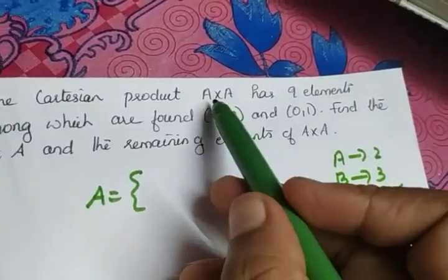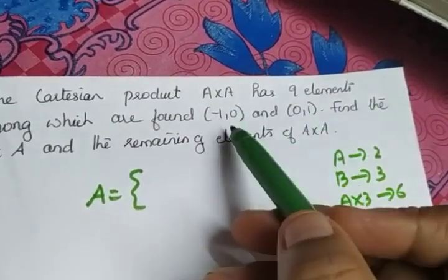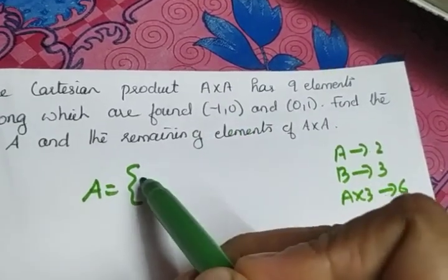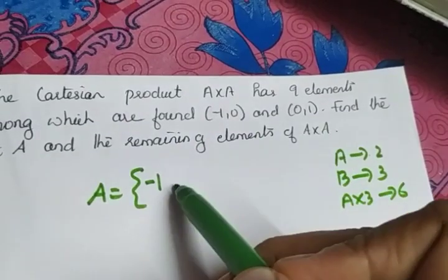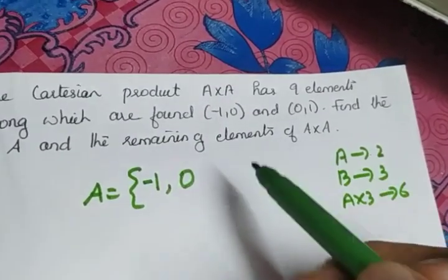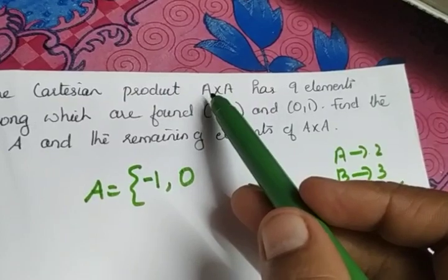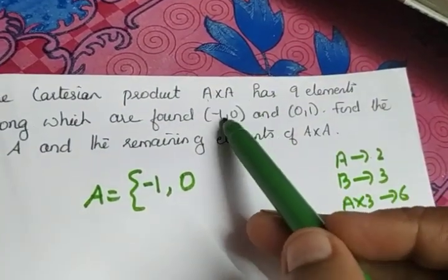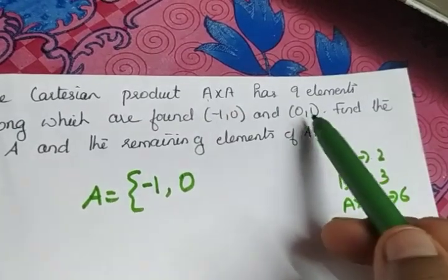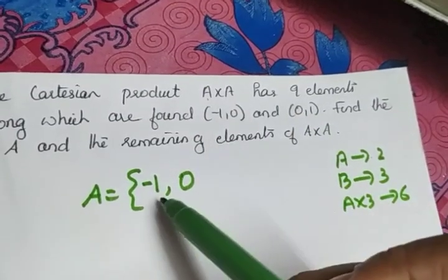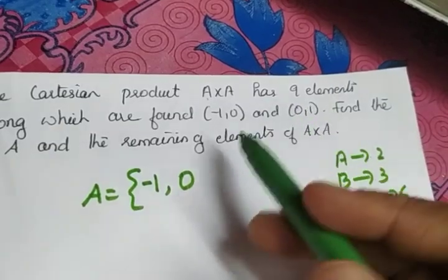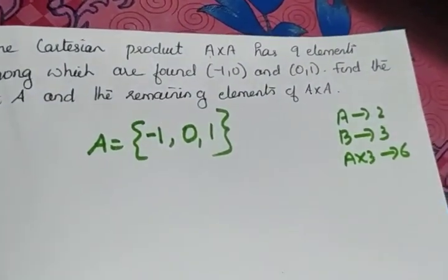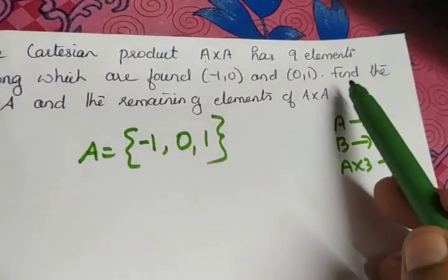Among the elements of A cross A, two ordered pairs are given: (-1, 0) and (0, 1). From (-1, 0), -1 is an element of A and 0 is an element of A. From (0, 1), 1 is also an element of A. So A contains three elements: minus one, zero, and one.